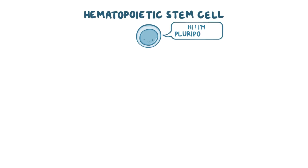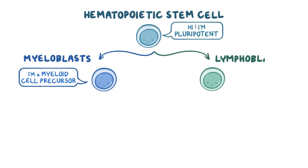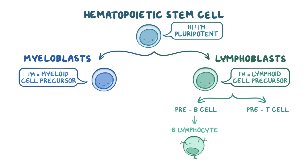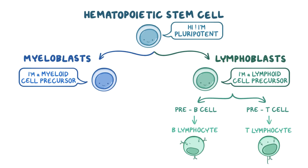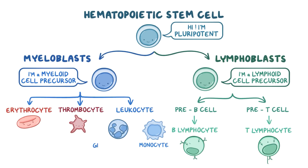Hematopoietic stem cells are pluripotent, meaning that they can give rise to both myeloblasts, which are precursors of myeloid blood cells, and lymphoblasts, which are precursors of lymphoid blood cells. These lymphoblasts can be pre-B cells, which develop into B lymphocytes, or pre-T cells, which develop into T lymphocytes. If a hematopoietic stem cell develops into a myeloid cell, it'll mature into an erythrocyte, or a red blood cell, a thrombocyte, or a platelet, or a leukocyte, which is a white blood cell, like a monocyte or a granulocyte.